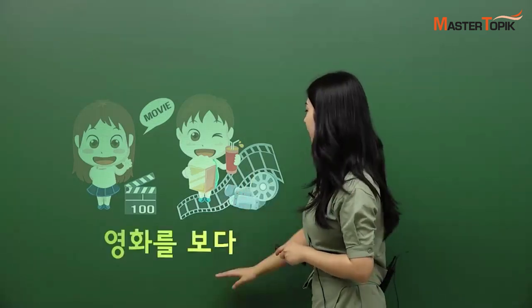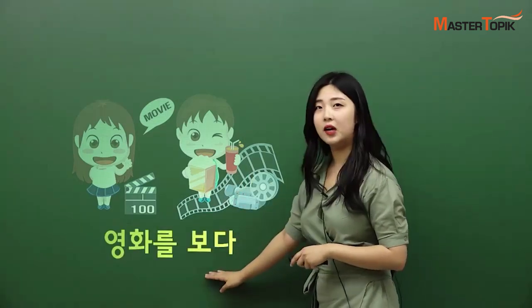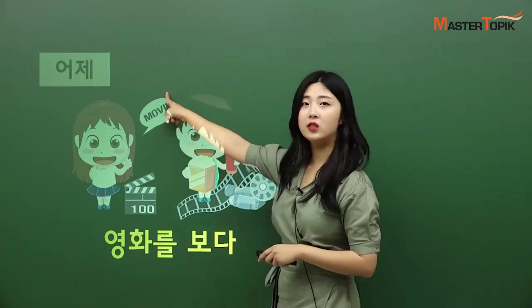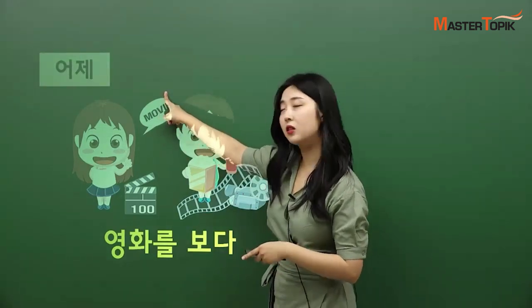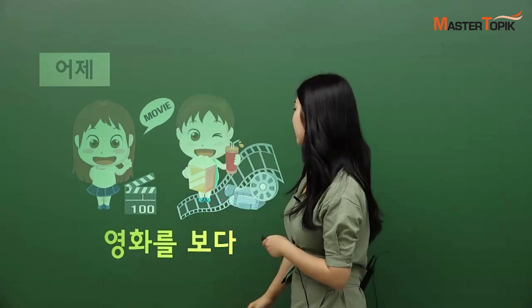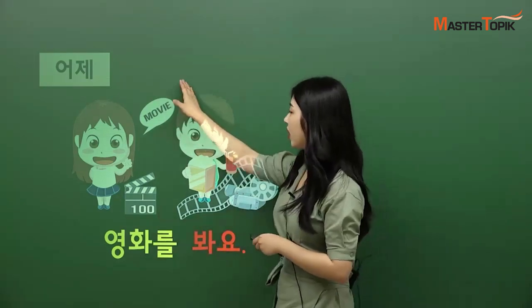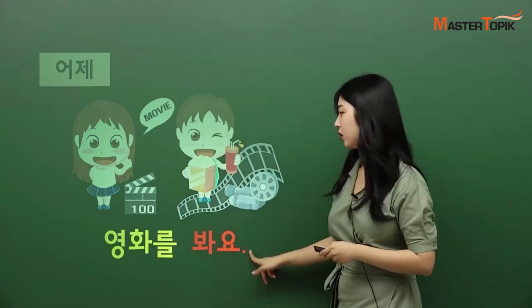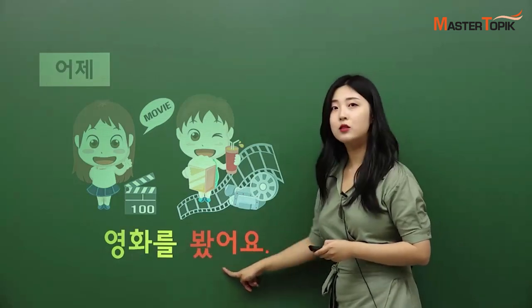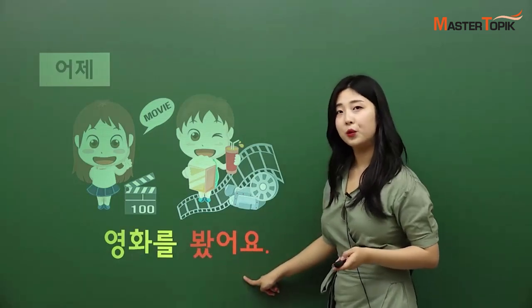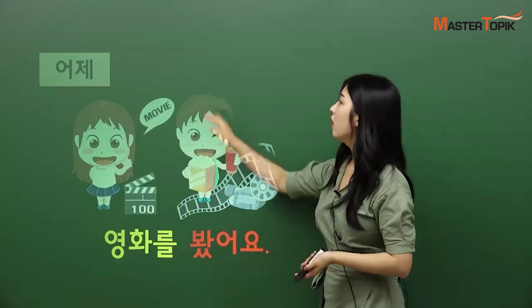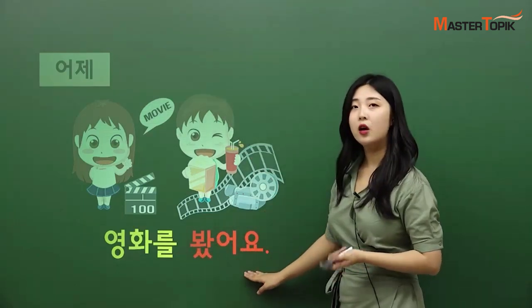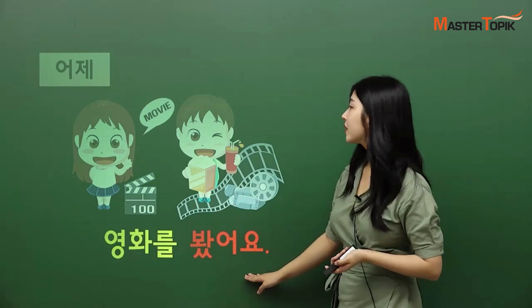Movie — 영화를 보다. 어제 — the time is in the past. 어제 영화를 봤어요 — 'I saw a movie yesterday.' Into past tense: 봤어요.